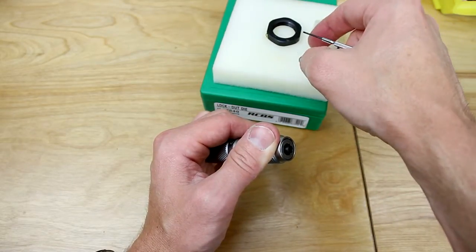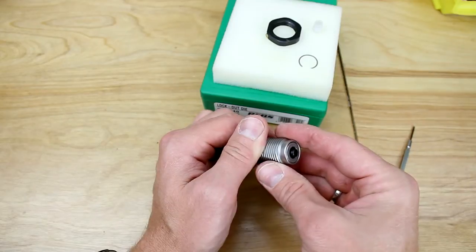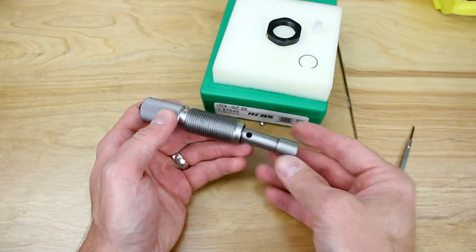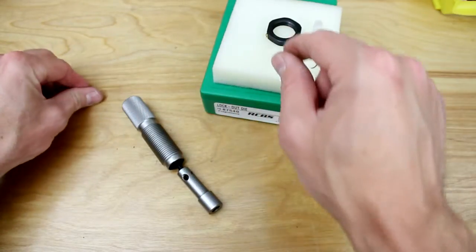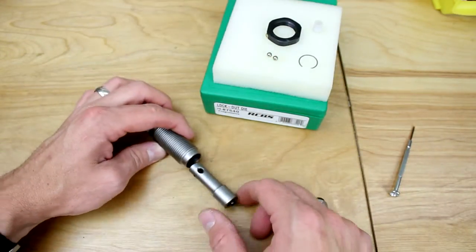Okay, so we have got the circlip off. Now if we just tilt the assembly, this carrier and the corresponding ball bearings are going to come flying out.